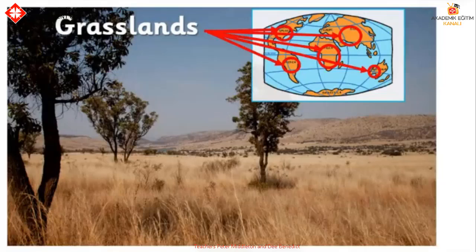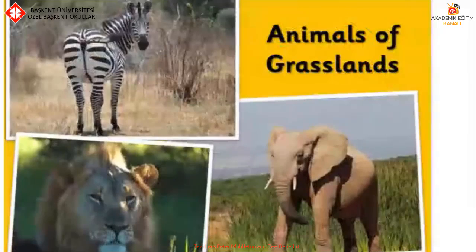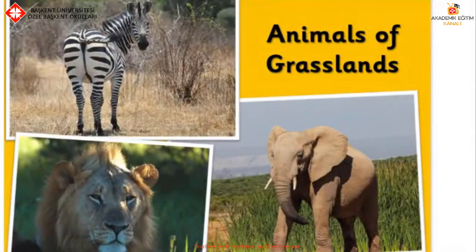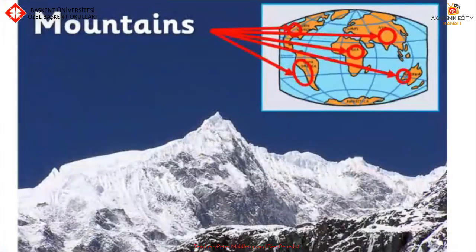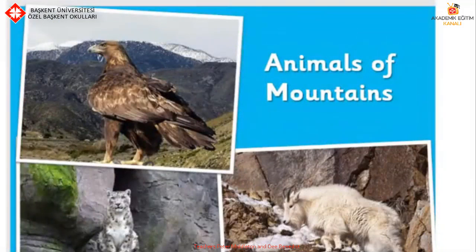These are the grasslands. You can find them around the world. What animals can you find on the grasslands? You can find a zebra, lion and an elephant. Are there any more animals found on the grasslands? And here are the mountains. These are some of the animals found on the mountains — there's a mountain lion, an eagle and a yak. What other animals can you find on the mountains?